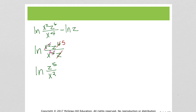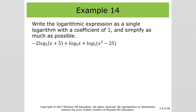Just be careful how you write the division inside the natural log. If you write it ambiguously, it could look like x squared is under the natural log rather than inside the argument. So be very careful when writing these.